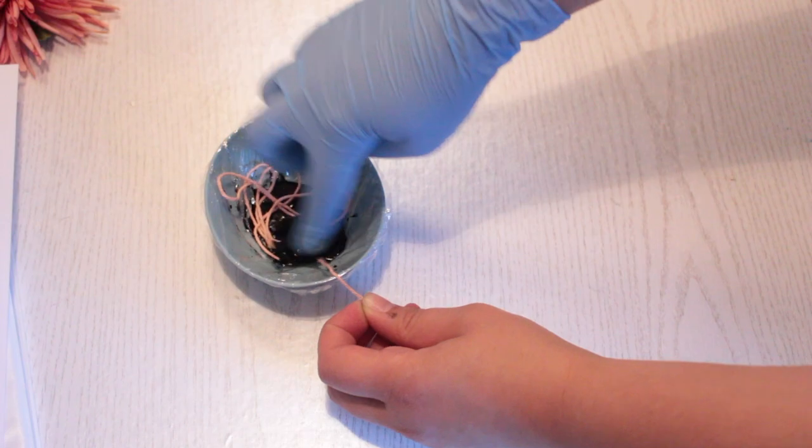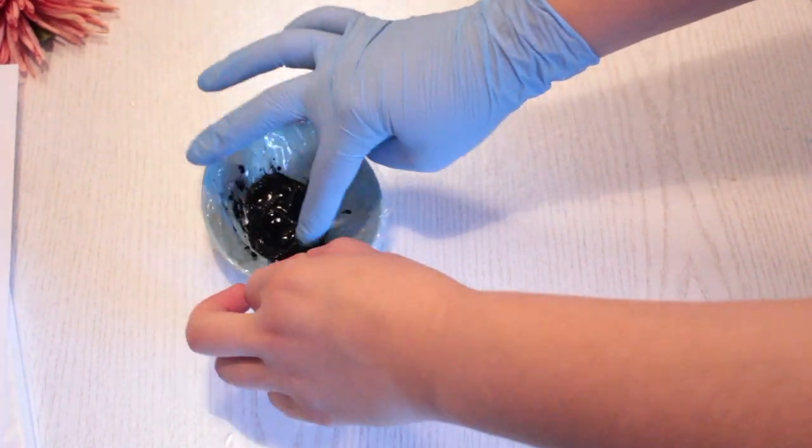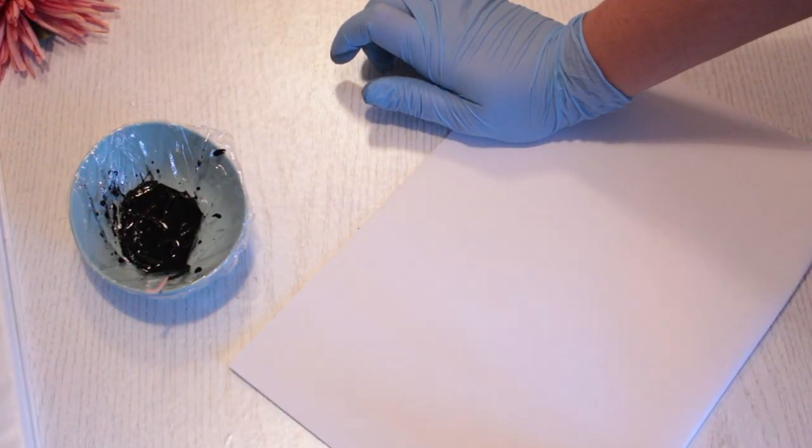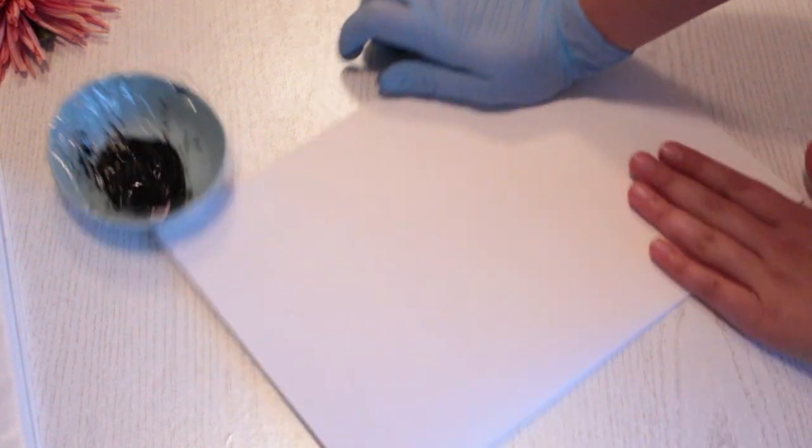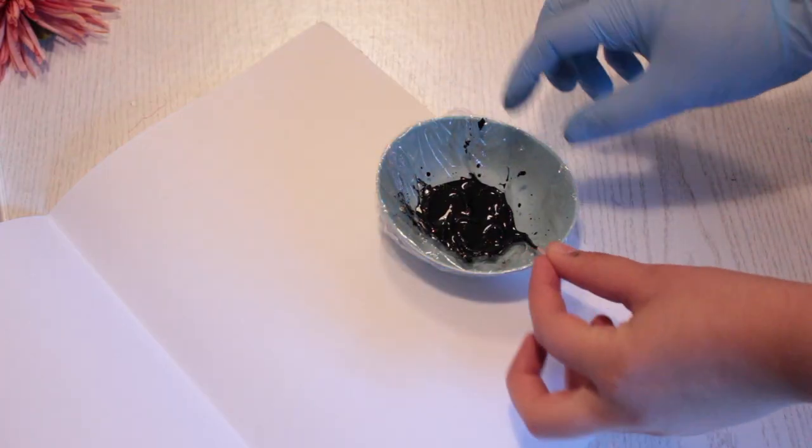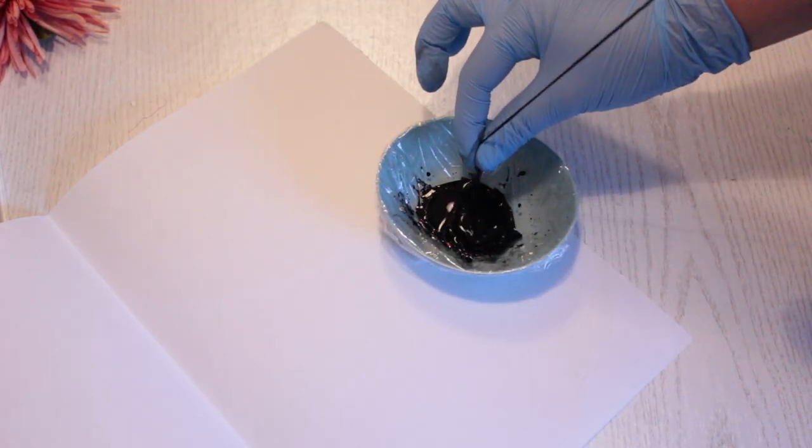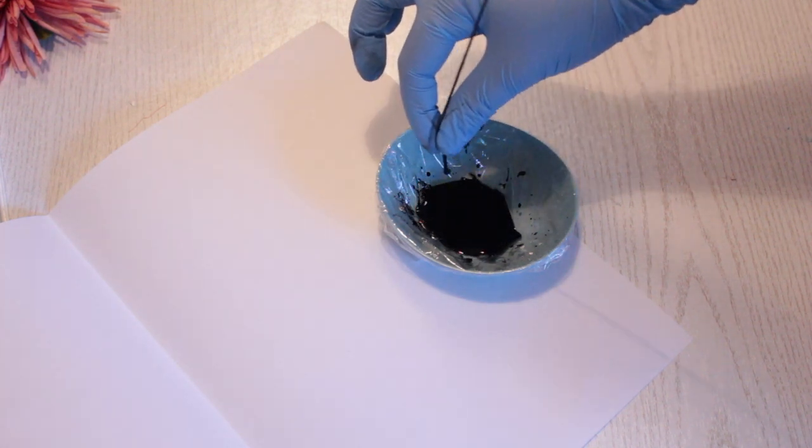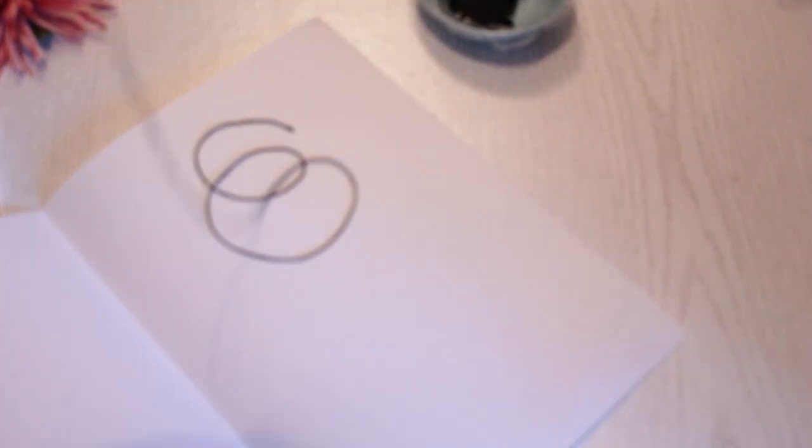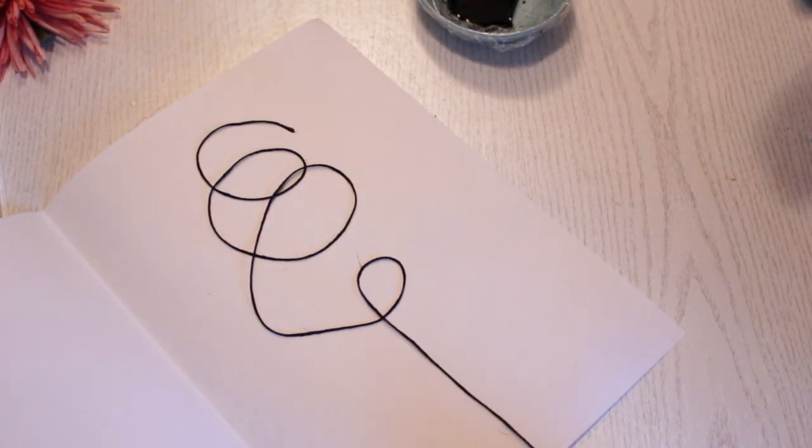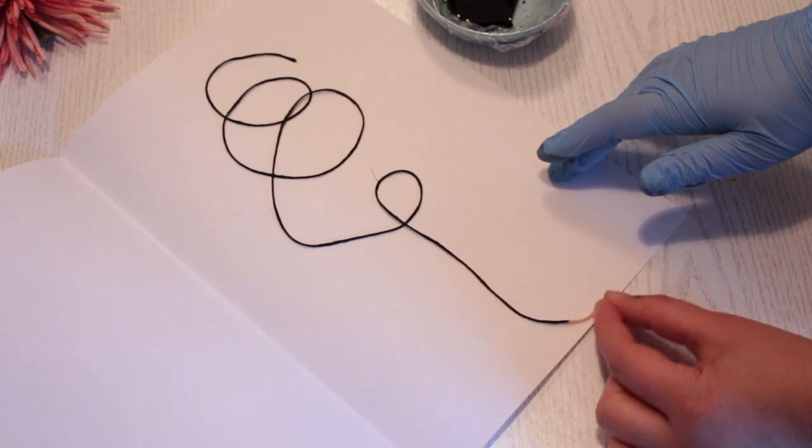Put the string into the ink and let it soak. Take a piece of A3 sized paper and fold it in half. Then pull the string out of the ink while squeezing the excess ink off. Place the string inside the folded paper in whatever kind of way you want and make sure there's a little tail in the bottom of the paper.